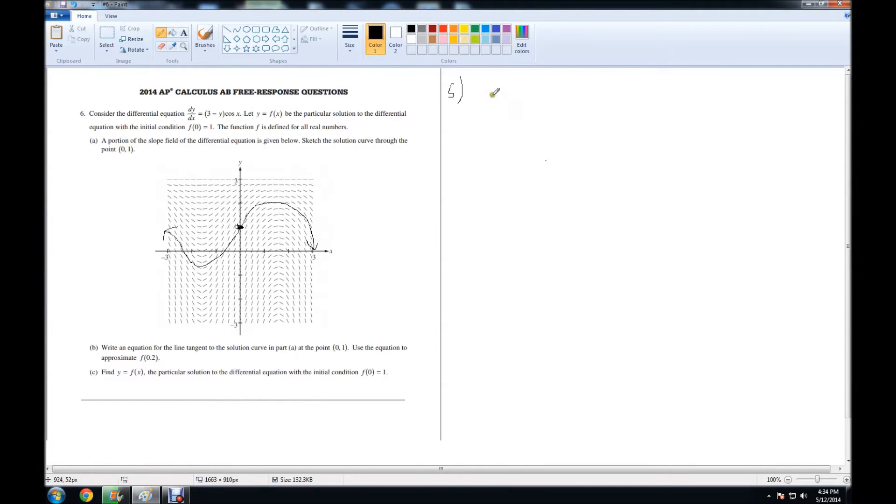If we plug in 0 for x and 1 for y, we get m equals 3 minus 1 times cosine of 0. Cosine of 0 is 1, 3 minus 1 is 2, 2 times 1 is 2. So this is our slope.